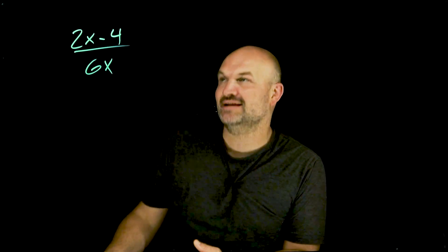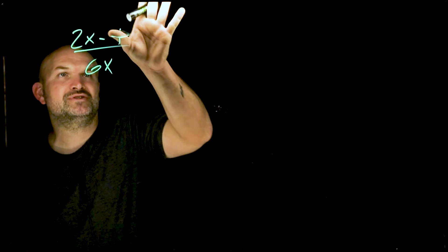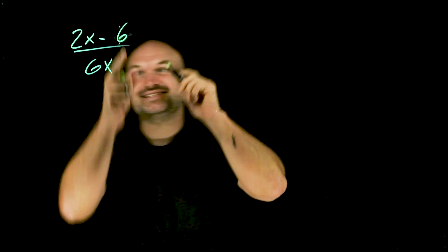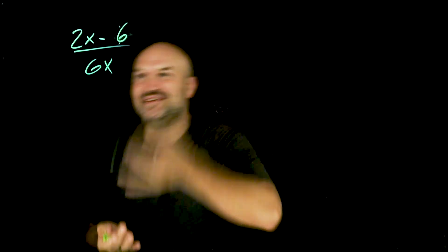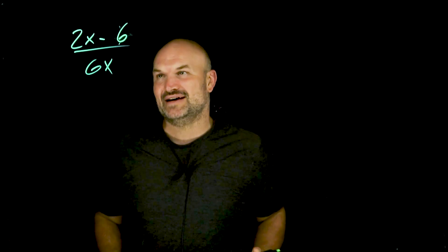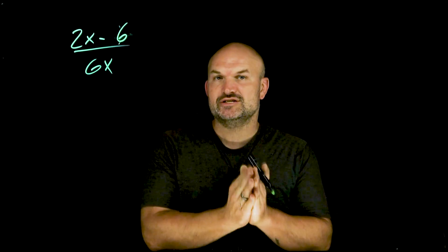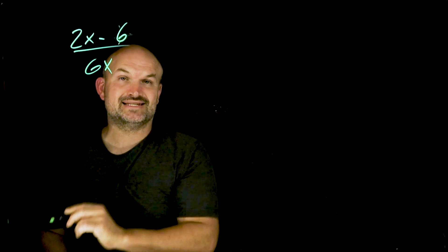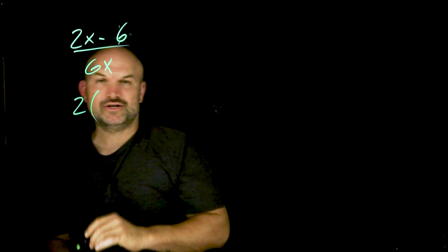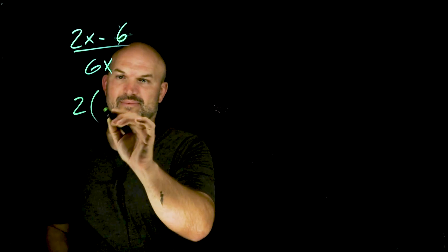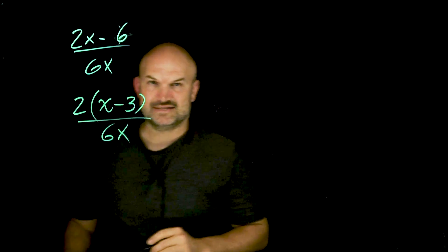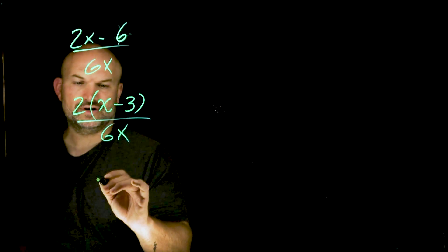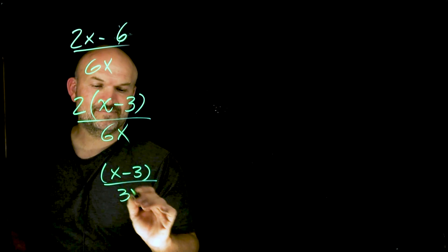This first one for factoring is not too bad, but I'm going to change this problem to have a six. The reason is students see the same number in the numerator and denominator and immediately want to divide them out — but no, do not do that. Step number one: always look to factor first. In this numerator, I can factor out a common factor of two from 2X and six. When I do that, I factor out my two and I'm left with (X minus 3) divided by 6X.